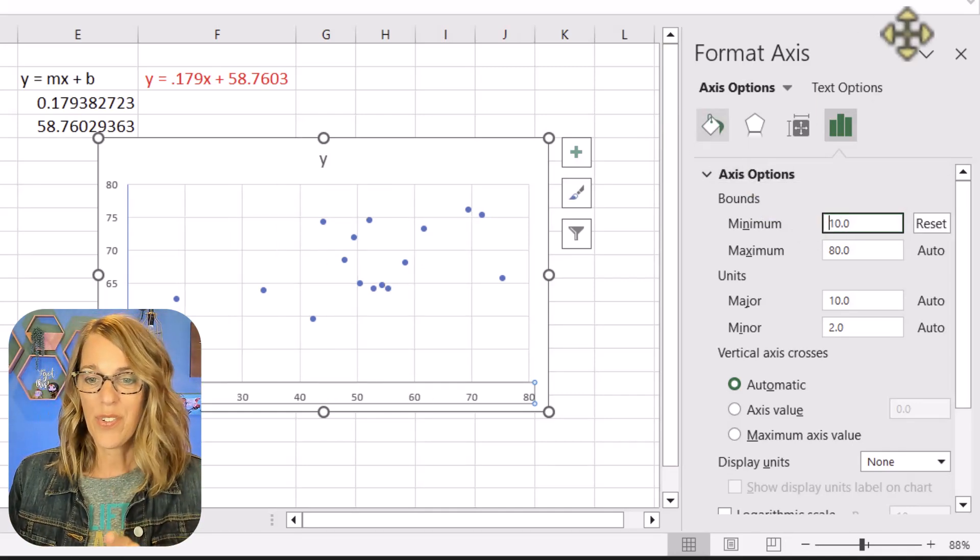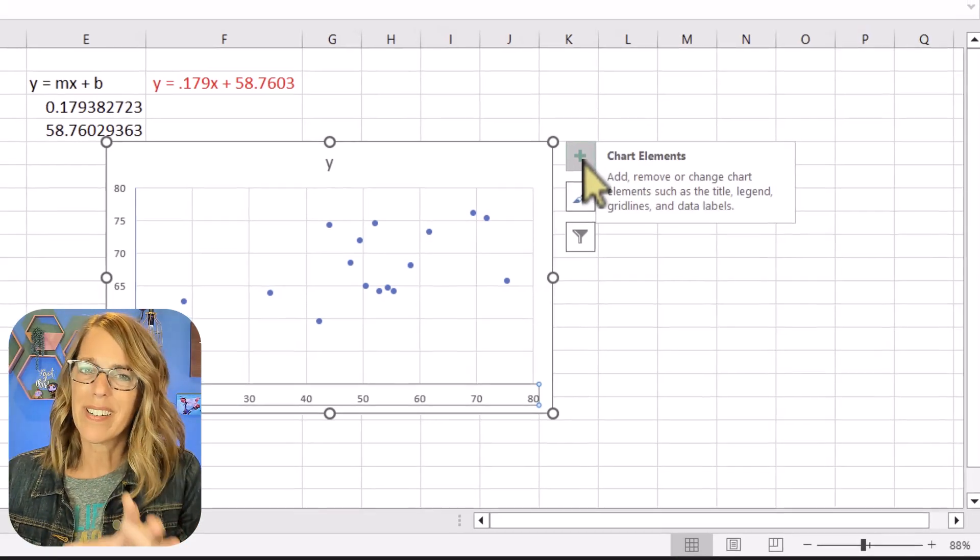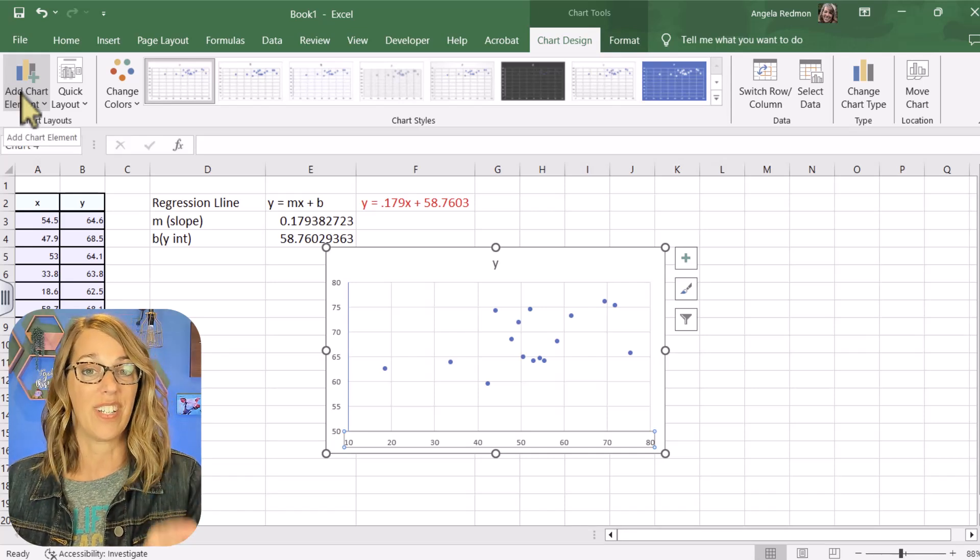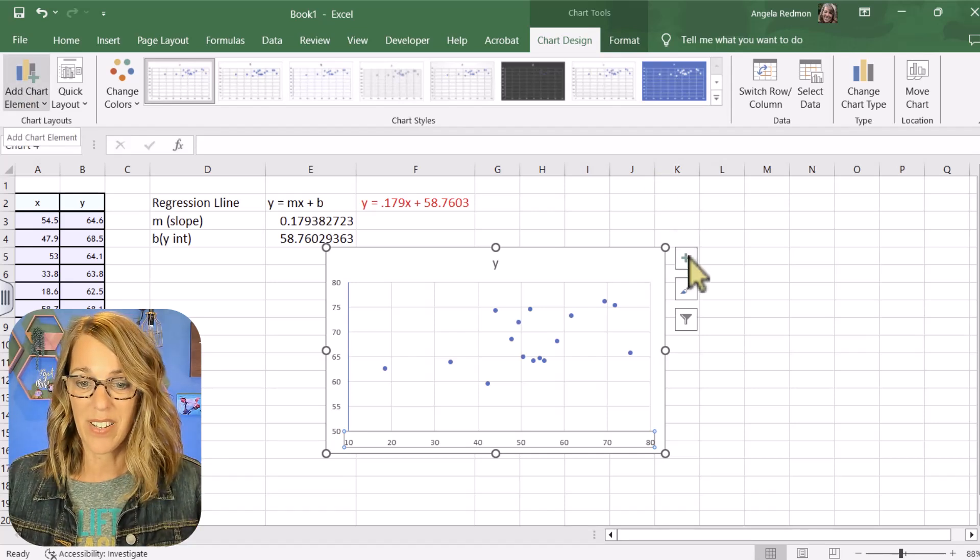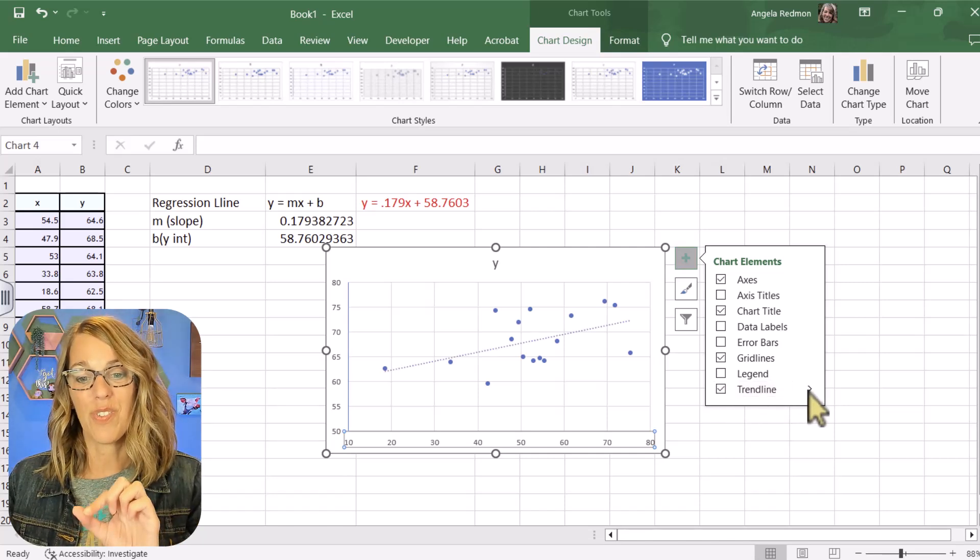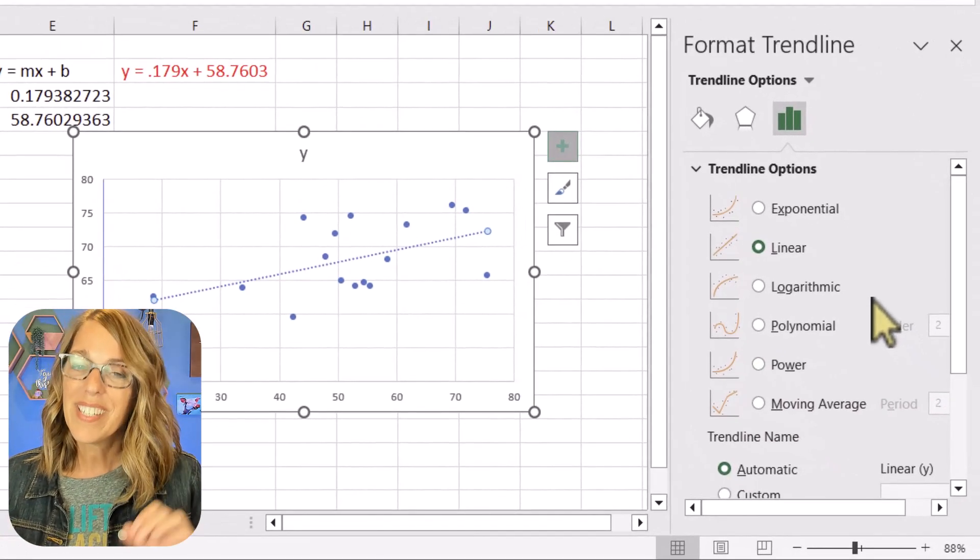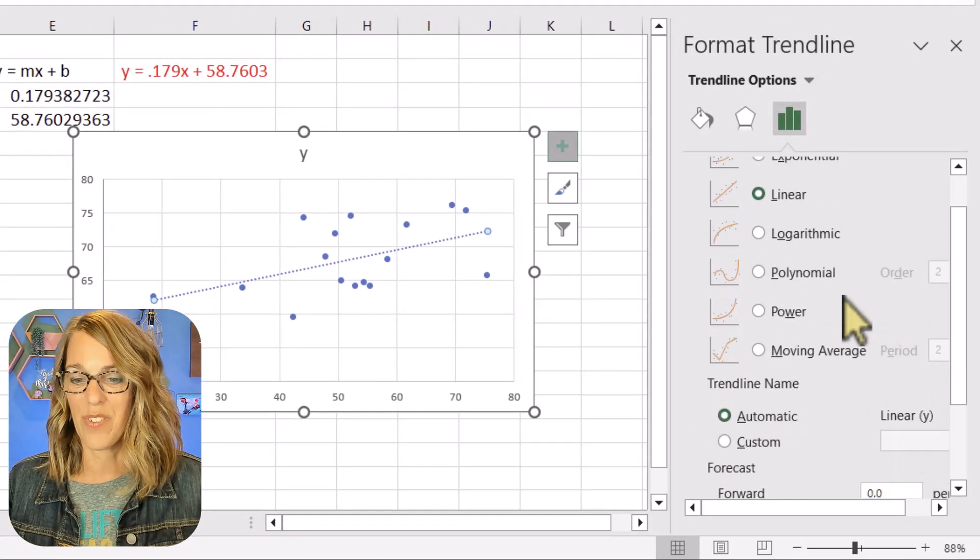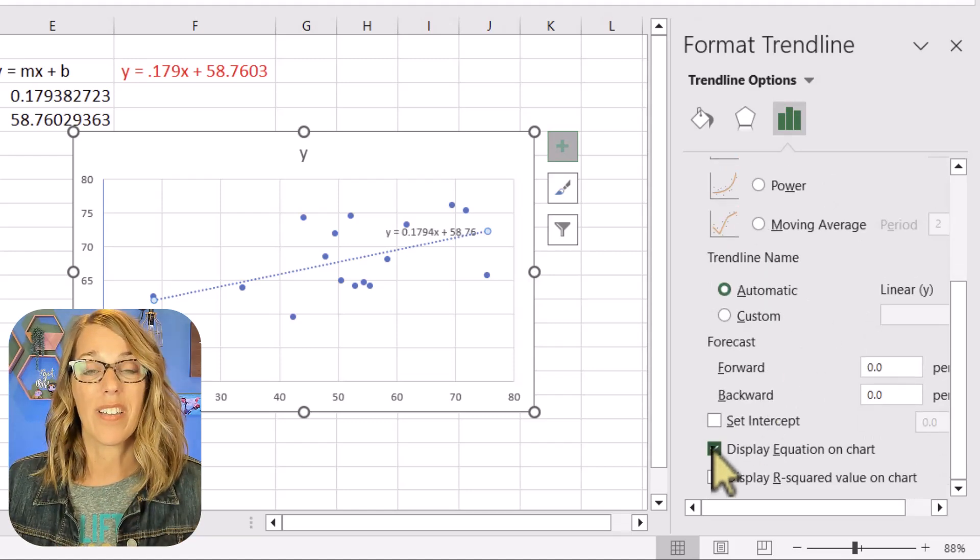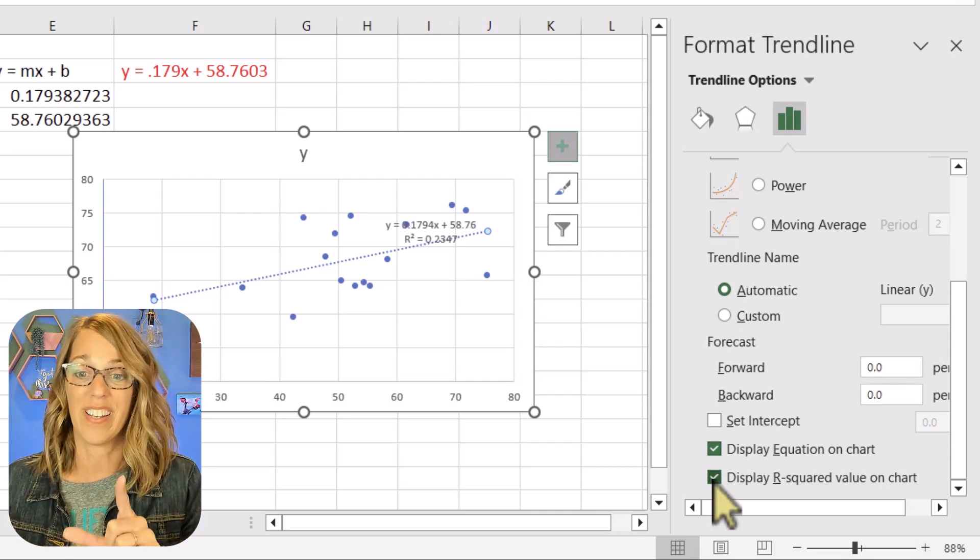Now let's add that trend line. To add the trend line I'm going to click my x here. I'm going to use the plus sign here. If you happen to not have this plus sign you want to go over here to the left and choose add chart element. I'm going to click the plus sign though and I'm going to choose trend line. I'm going to check the box but I'm also going to choose this arrow for more options and I do want more options. I really want the equation of that trend line. So as I scroll down here I'm going to check that box to display the equation on the chart. I'm also going to click the other box to display the r squared value on that chart.